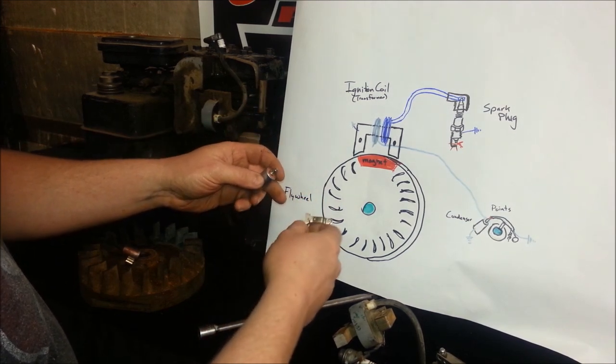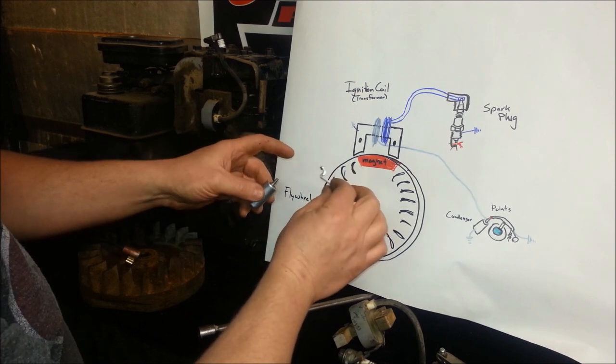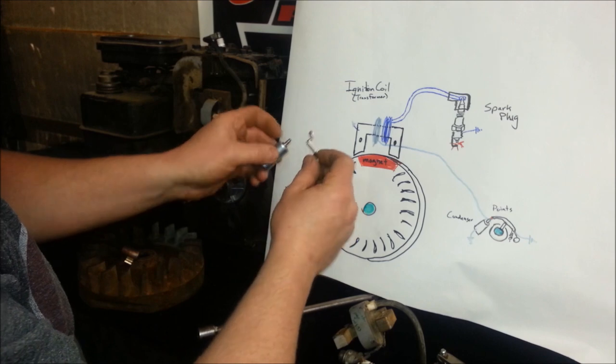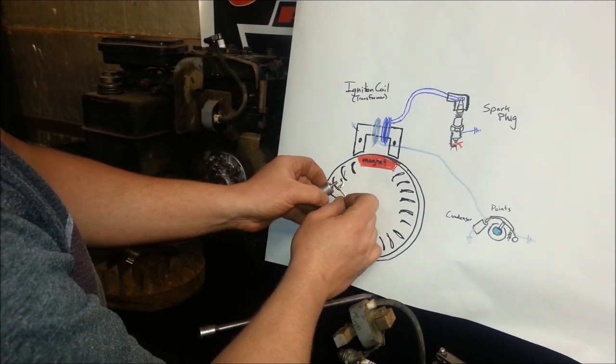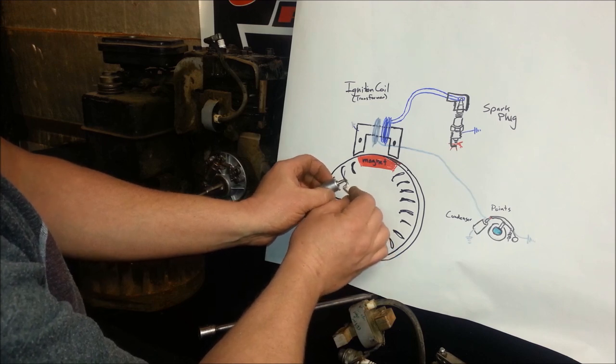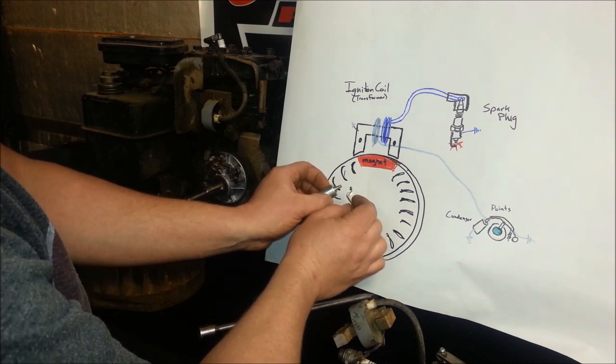On the very top is one of our points. And on the top of our little arm right here is our other points. And what this does is as the engine moves, it stays open the majority of the time. And at one split second, it just closes. Just for a split second. Closes and opens right back up.